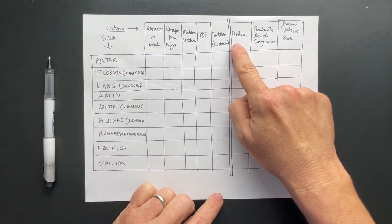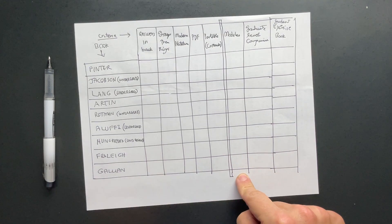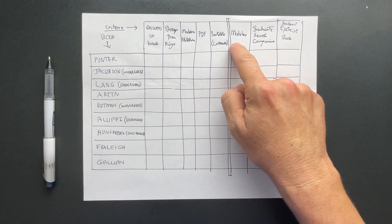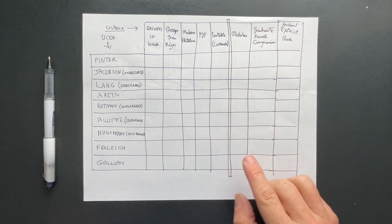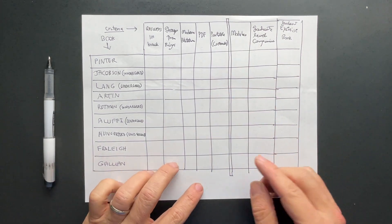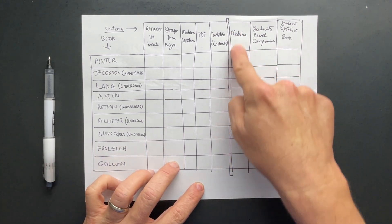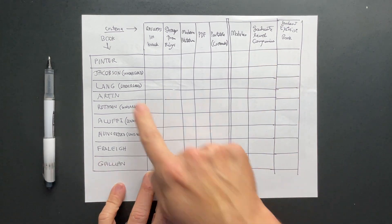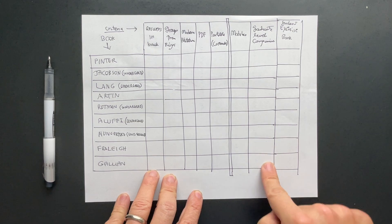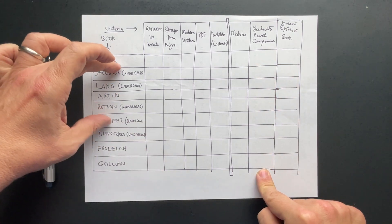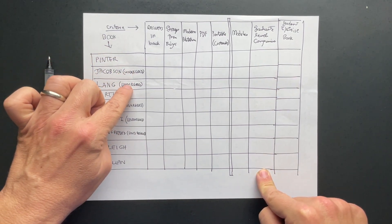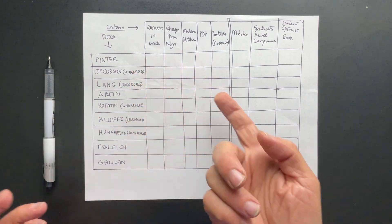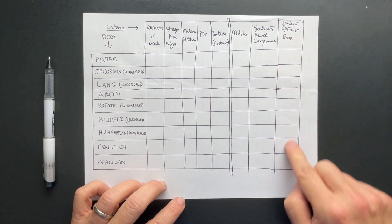The three nice-to-haves are: whether the book covers modules — I think free modules are really like vector spaces and the chapters on modules are very linear-algebra-friendly; whether the book has a graduate-level companion — which is somewhat implied since I'm considering undergrad versions; and whether there's a student exercise book.